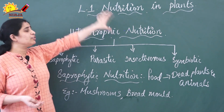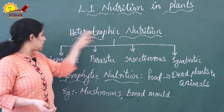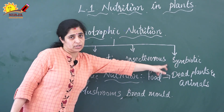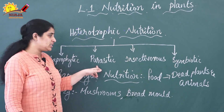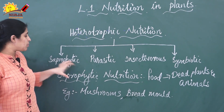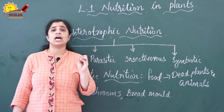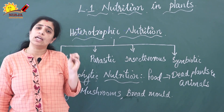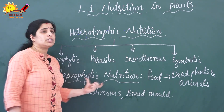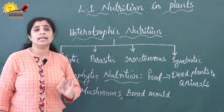Now we will discuss the different types of heterotrophic nutrition. The different types are: saprophytic, parasitic, insectivorous, and symbiotic modes of nutrition. First, we will discuss saprophytic nutrition. In this mode of nutrition, the plants derive nutrients from dead and decaying matter. They are known as saprophytes, and these saprophytes get food from dead and decaying matter.